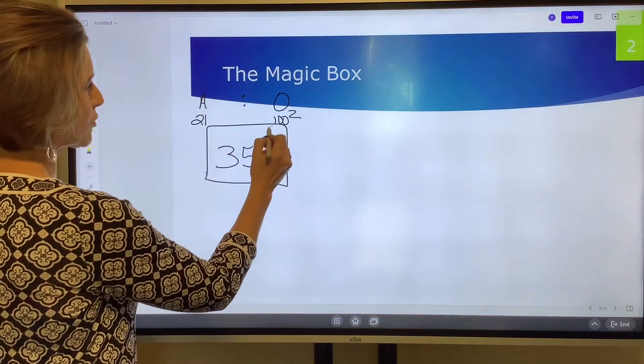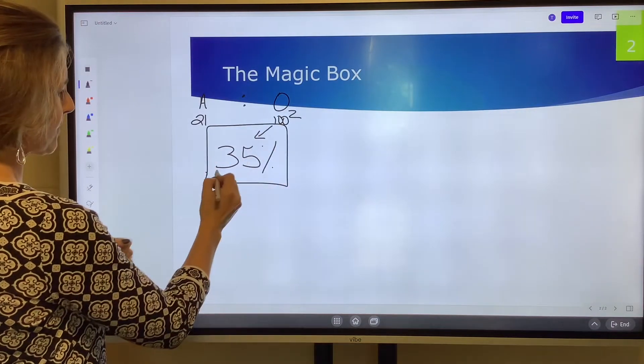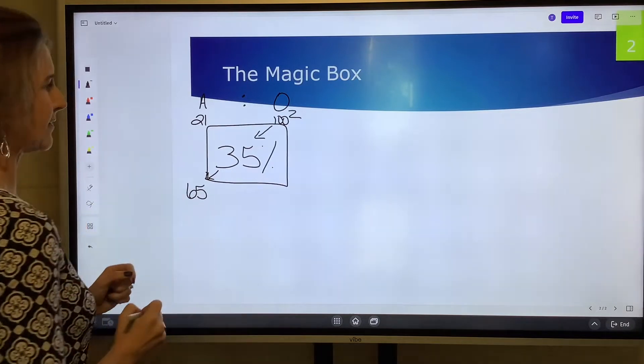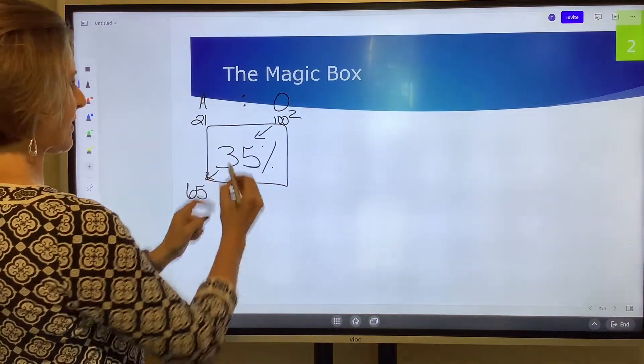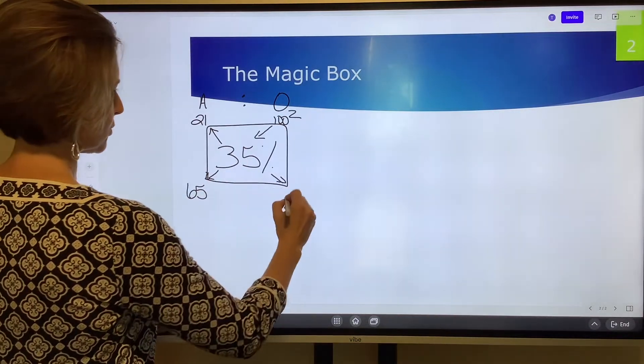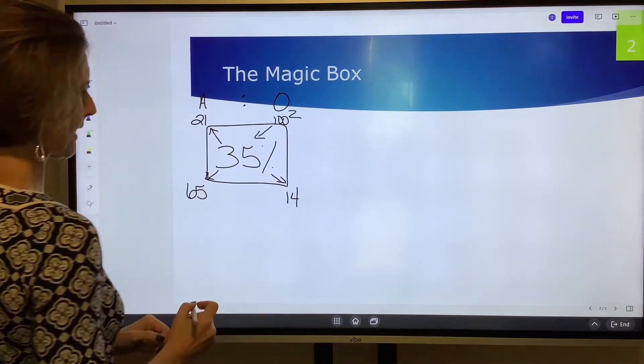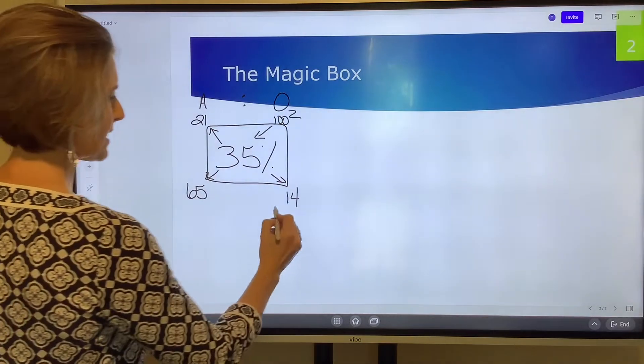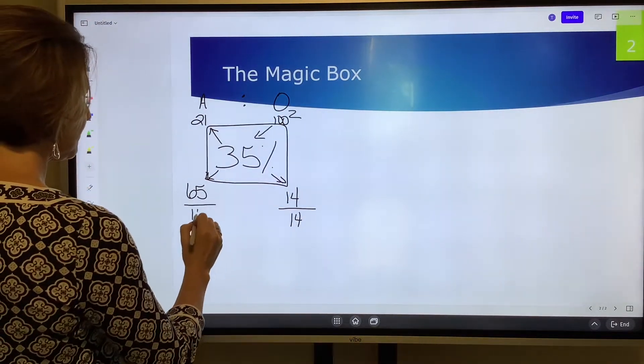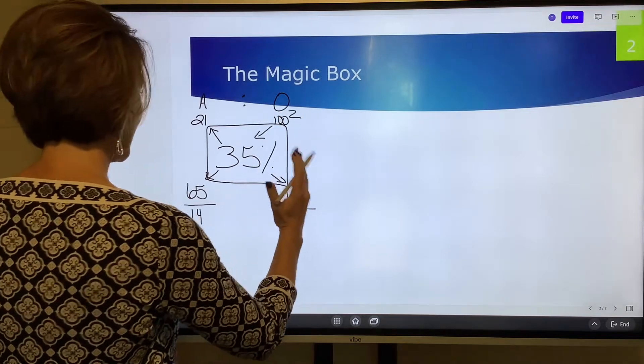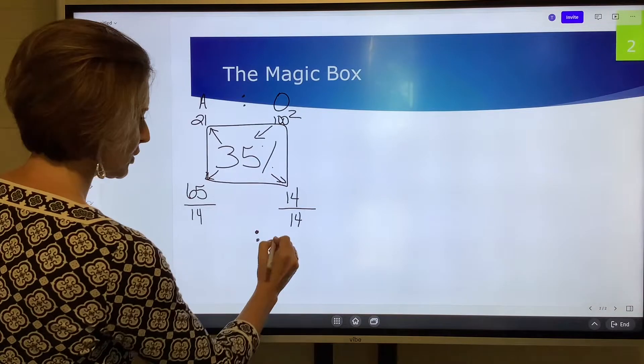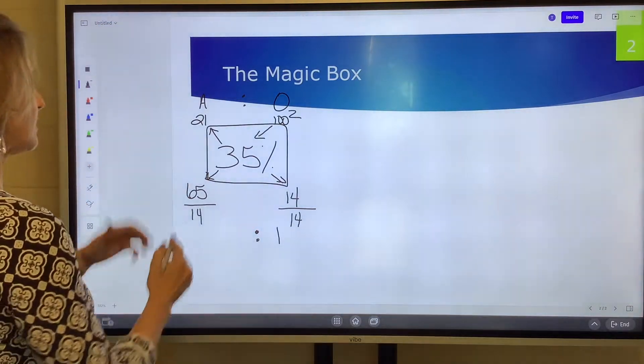Then we do this weird kind of math. I take 100 minus 35 and that answer goes down here—that's 65. And then I take 35 minus 21 and that answer goes right here. So 65 to 14. You have to reduce that, so you're always going to divide from the right to the left because basically oxygen will always be one part.